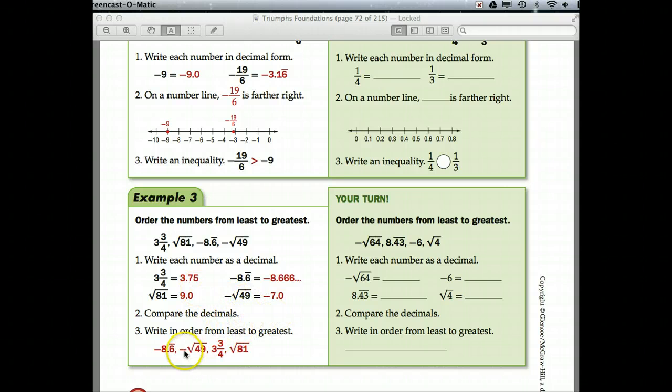So, we compare the decimals, and so we see that this is the smallest number, with this one next, then this one, and then this one. Now, when you order them from least to greatest, you don't write down their decimal equivalents. They want you to order the original numbers. So, that's why it's handy to actually write down what you're doing. Don't try to do it all in the calculator and keep it in your head.